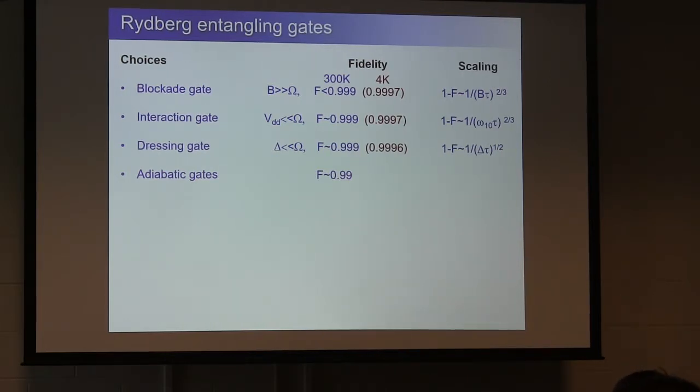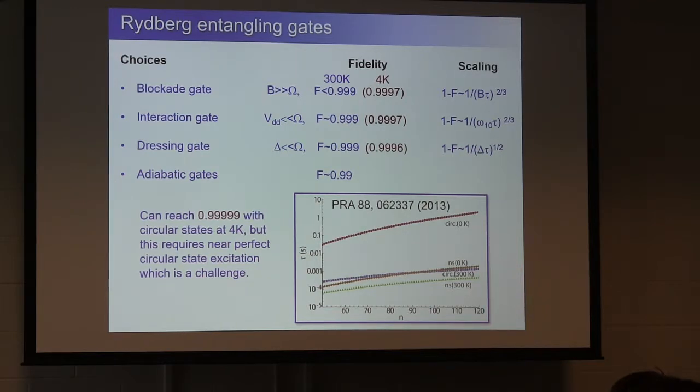You can do better by going to circular states, which were mentioned this morning. And we wrote a kind of crazy paper a few years ago, wondering about whether or not we could do high fidelity gates with circular Rydberg states. And here's the lifetimes of different states. Here's the S-state at 300 kelvin and the S-state at 0 kelvin, which is about the same as the circular states at 300 kelvin. But if you put the circular states in the cryostat around n equals 100, you have these one-second lifetimes. Extremely long spontaneous emission lifetimes. And if you do that, in principle, you could reach five nines or better for a blockade gate. But that assumes that you could near-perfectly excite the circular states. And that's a real challenge. There's been some progress on that in the ENS group just recently. But not at five nines. So it's a fun paper to write.